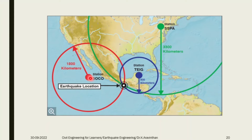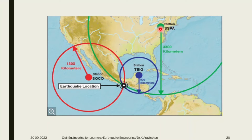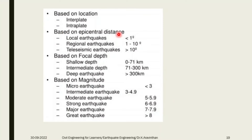How to locate an earthquake? Three instruments are installed because all three will measure the same earthquake. Nobody can physically go to the focal depth where the earthquake occurred. By installing these instruments, one instrument says the earthquake occurred at 1800 km, another at 900 km. With a minimum of three instruments you can locate the earthquake - at what time it started and when it reached the station. Based on epicentral distance and focal depth, you can determine how deep the earthquake occurred.